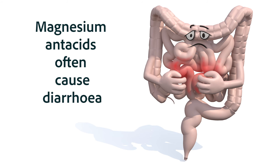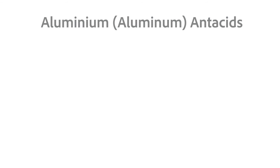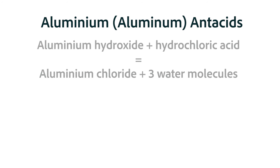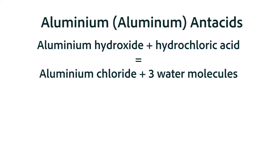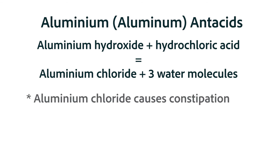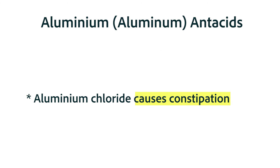Aluminum antacids start off in a very similar way, but the end result is three molecules of water and a molecule of aluminum chloride. The remaining aluminum chloride causes constipation. So remember: aluminum causes constipation, and magnesium antacids cause diarrhea.